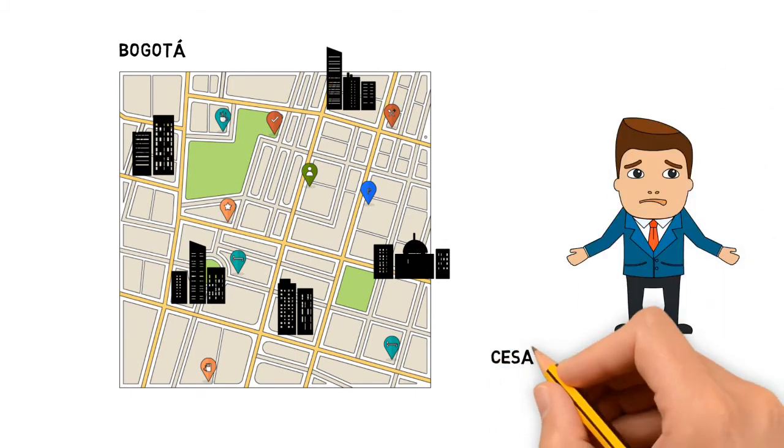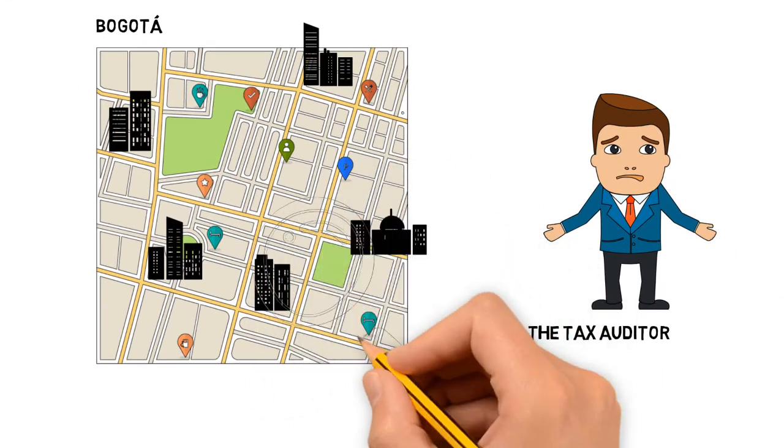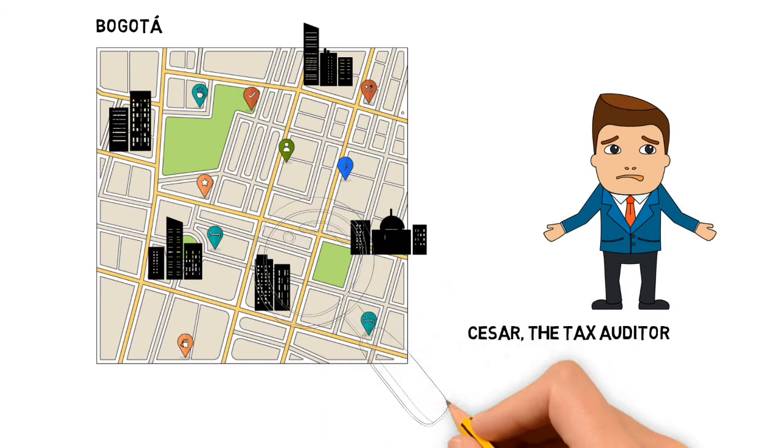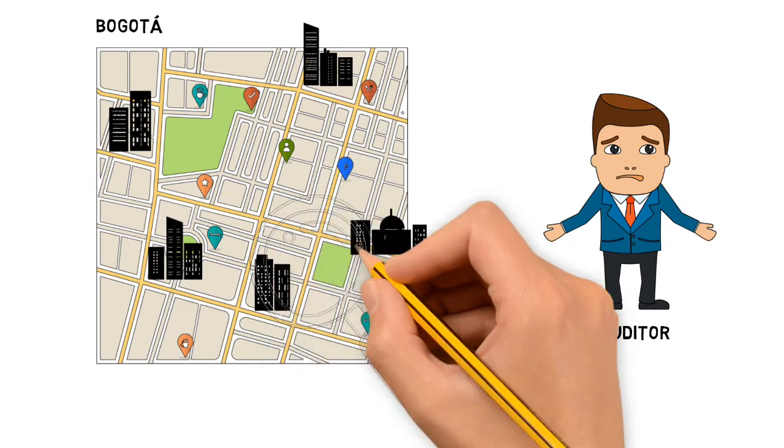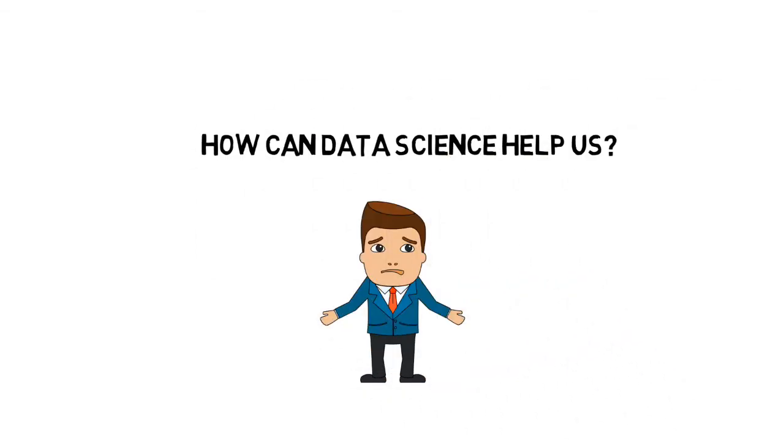Caesar, the urban delineation tax auditor, has too many buildings to audit and doesn't know which to audit first. Since auditing a building can take up to a year, he should only audit the most suspicious constructions. To make things worse, Caesar doesn't have a historic data set or labeled data that allows him to use supervised learning. How can data science help Caesar the auditor?